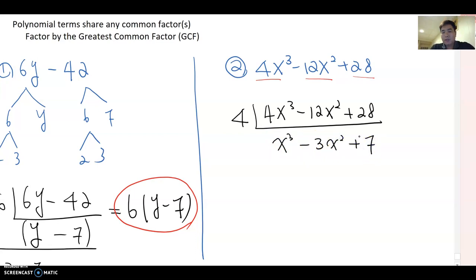And then we evaluate whether x³, 3x², and 7, those three terms share any common factor. Obviously not. Therefore, cover by parentheses and make multiplication shape. Then 4 times (x³ minus 3x² plus 7).